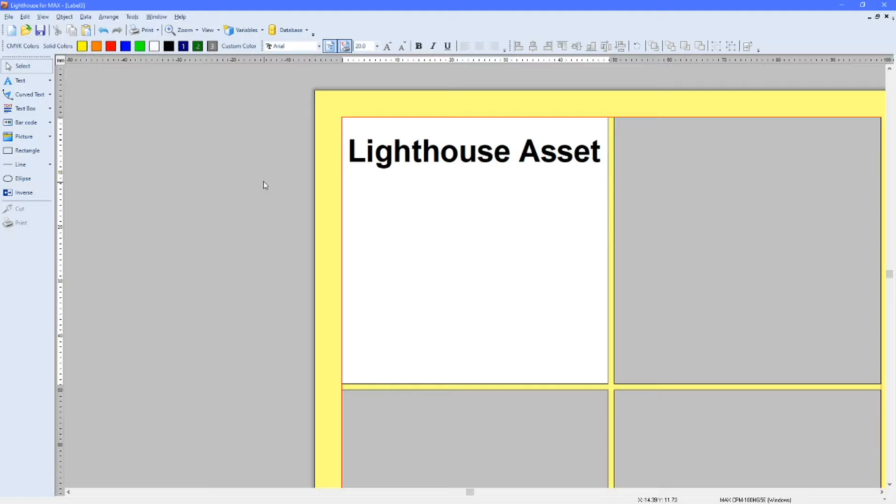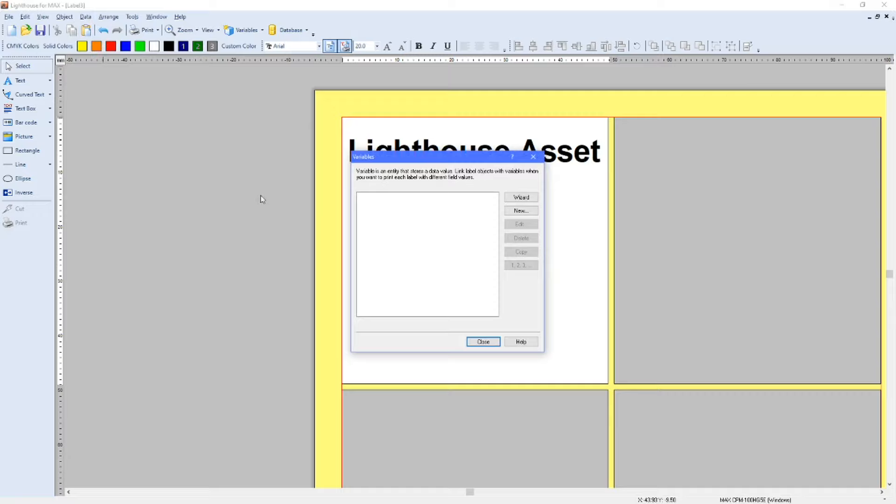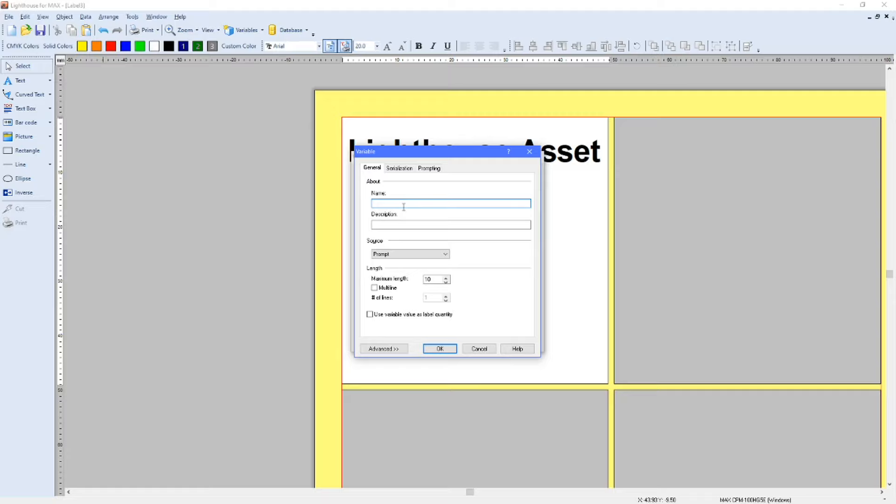Now we want to create a sequential number like we were saying before. If you go to data at the top here and go to variables, you can use the wizard if you like. That will just take you through step by step. It's a slightly different, more foolproof process. Or you can click on new. Either or, it doesn't really matter. You will get the same result. I'm just going to give it a name. So, let's just call it LH assets.